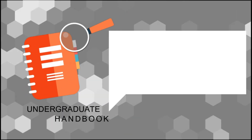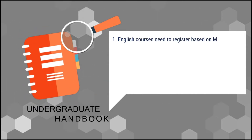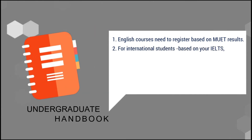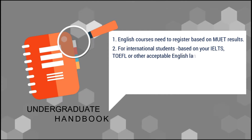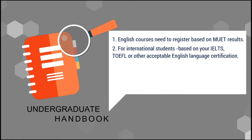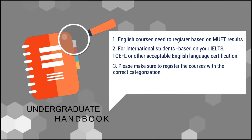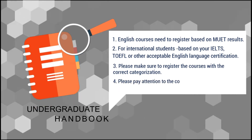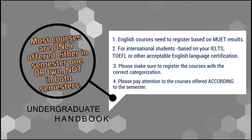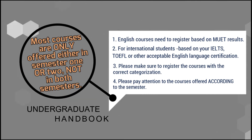You can check the undergraduate handbook to find out which English courses you need to register based on your MUET results. For international students, the level of compulsory English courses will be based on your IELTS, TOEFL, or other acceptable English language certification. Please make sure to register courses with the correct categorisation and pay attention to the courses offered according to the semester, as most courses are only offered in either Semester 1 or Semester 2, not both.